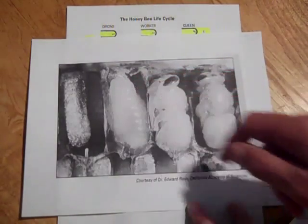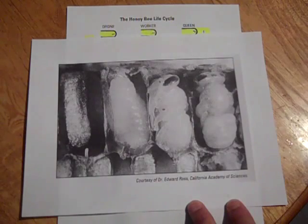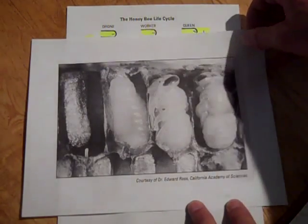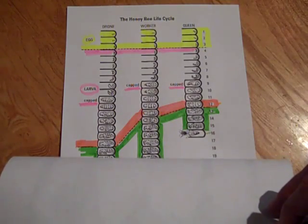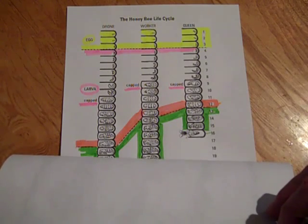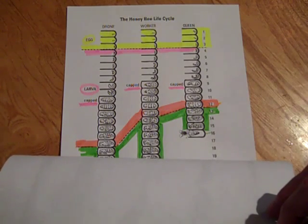This one here is a pupa that hasn't developed yet. It's probably, oh I would say like day 11. Yeah, that was not, see it wasn't a pupa, that was a larva around day 11 or 12.